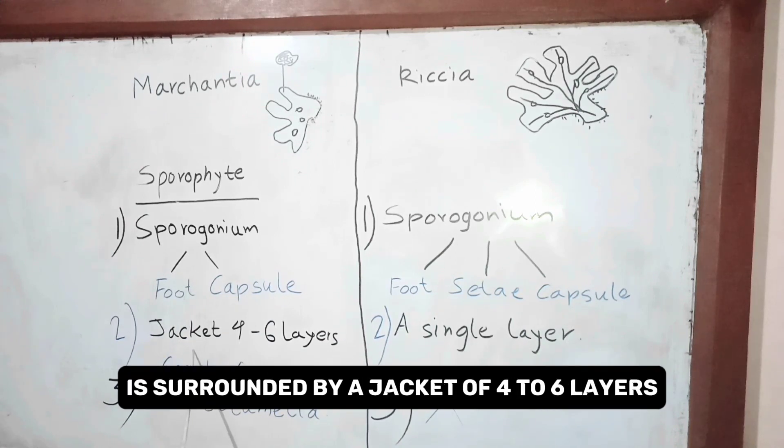The capsule of the sporogonium of Marcensia contains columella, whereas the capsule of the sporogonium of Rhysia does not contain columella.